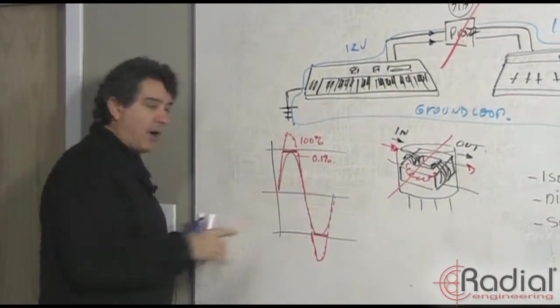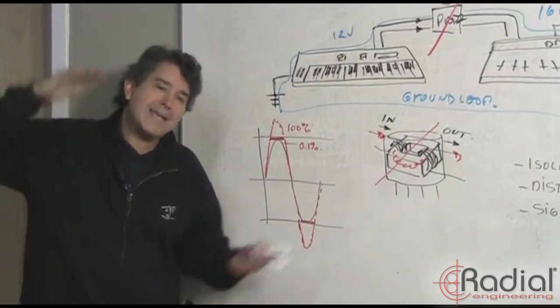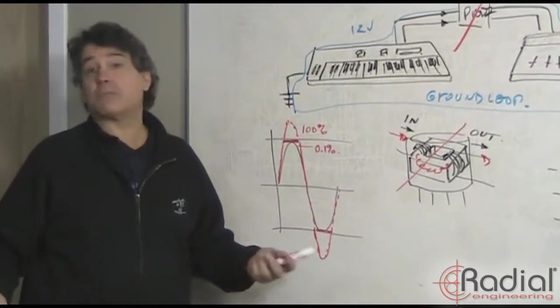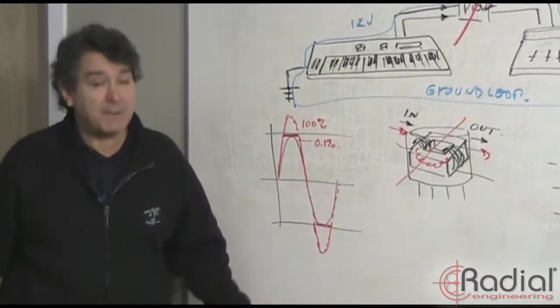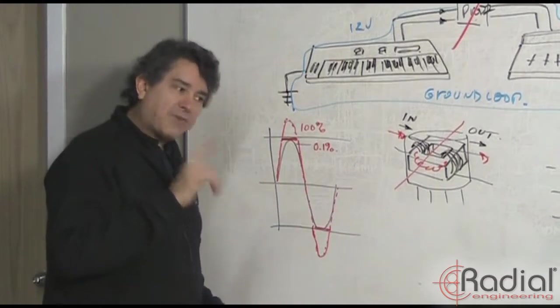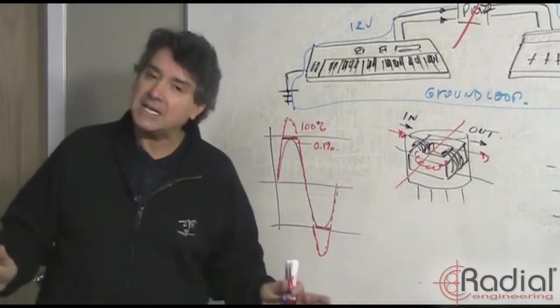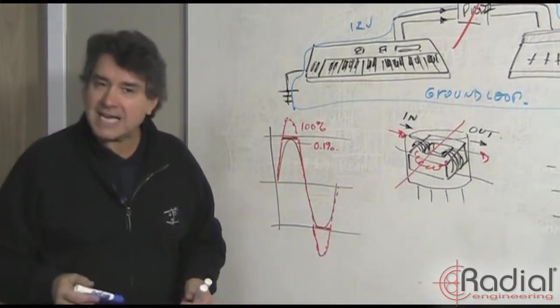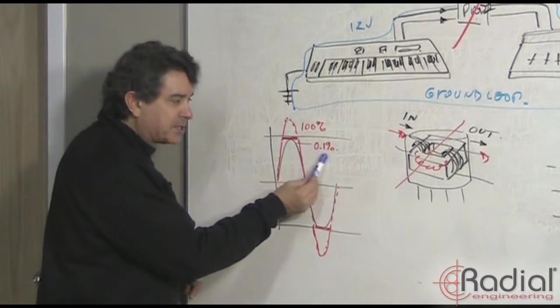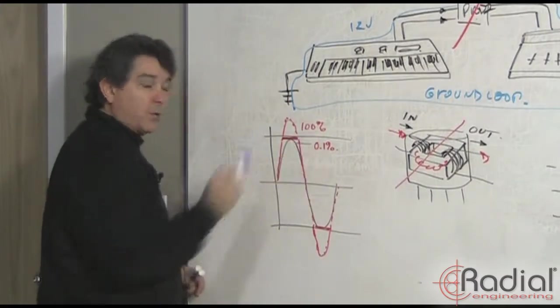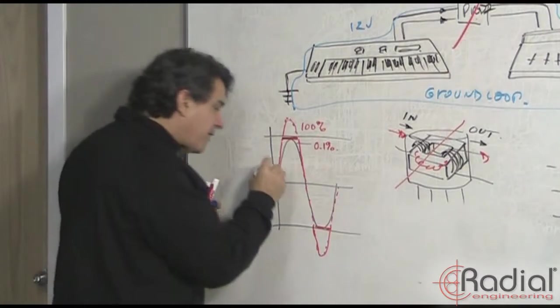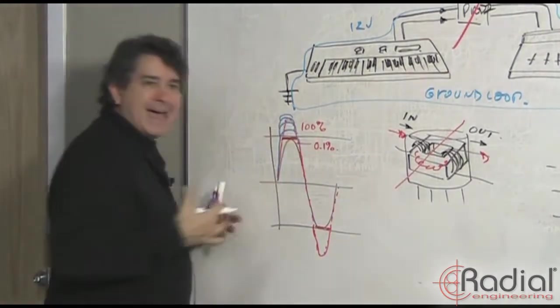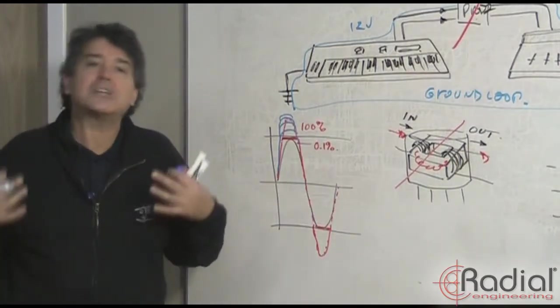Now there's another huge benefit to transformers. If you use an active DI box, an active DI box is limited, or the headroom is limited, by how much voltage you have within the DI box. And of course the problem with most DI boxes is they don't have very much headroom. What a transformer does, because a transformer is completely passive, you avoid the problem of headroom altogether. Transformers don't distort. They saturate. So an active circuit might go from 0.1% distortion to 100% distortion when you exceed the headroom. What a transformer does is it kind of rounds out the sound as it gets overloaded. It actually saturates.